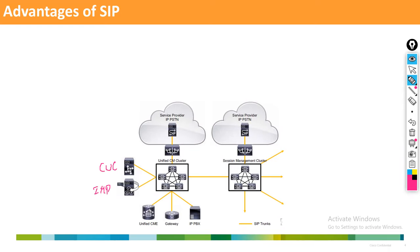Business Edition is the replacement for CME. Between CME and CUCM, you can communicate using SIP. Gateway to CUCM uses SIP. Any third-party PBX — for example, Avaya on one end, Cisco on the other — can also communicate using SIP. SME (Session Management Edition) to CUCM communication also uses SIP protocol.